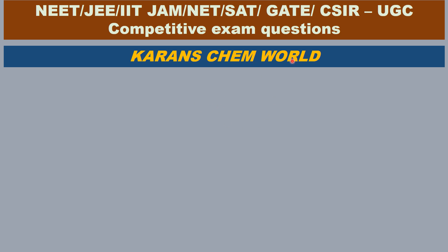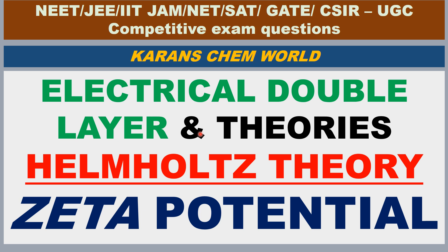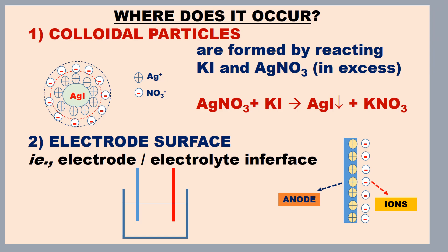Good morning. Welcome to Currents Kembold. In this video, let us study the electrical double layer — what is called the electrical double layer, and what is called zeta potential. There are three theories to explain the electrical double layer. Where does the electrical double layer occur?